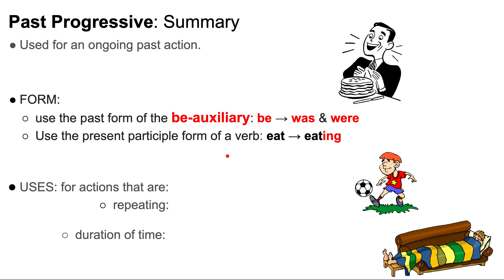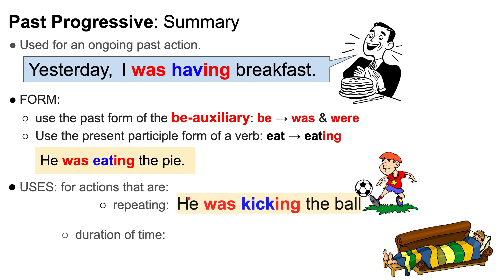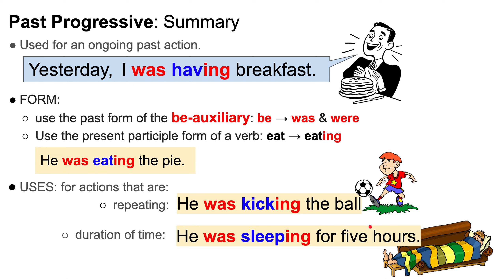Now let's do a quick summary. We use the past progressive for an ongoing past action — yesterday, I was having breakfast. To write the past progressive, we use the BE auxiliary was or were, and the present participle form of a verb: eat, eating. So he was eating the pie. The uses: the past progressive is used for repeating actions — he was kicking the ball many times — and for duration of time — he was sleeping for five hours. Thank you so much for watching. If you have any thoughts, questions, or concerns, please email me. I look forward to meeting you in class. Have a good day.